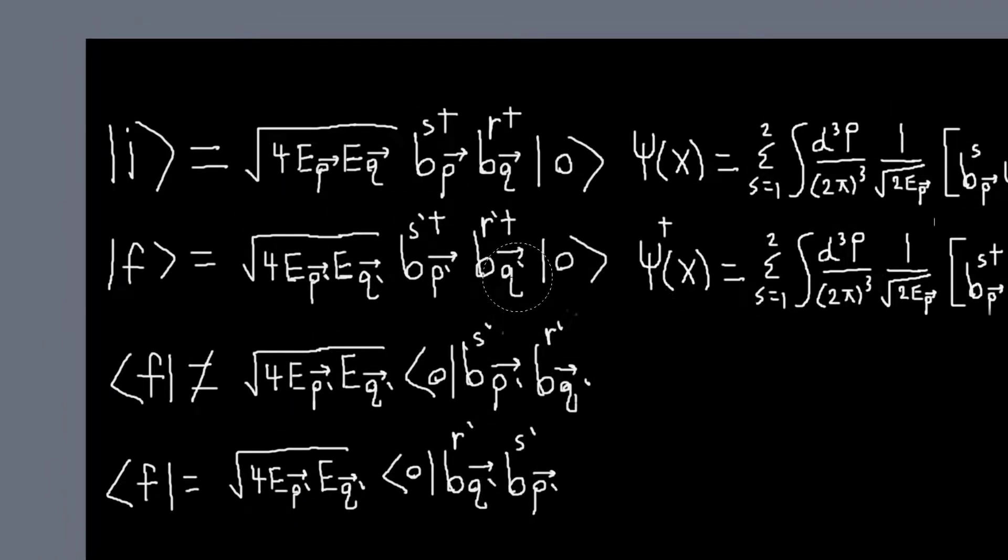And then just to emphasize another difference, it's that before all our creation operators, they commuted if they corresponded to different momenta and whatever, but they commuted is the point. So I could flip these things, and that wouldn't change the state, but now these will anticommute. So if I flip these, I get a minus sign. So that's important. So our bra will look like this instead of this. So there's a minus sign difference between these two states.